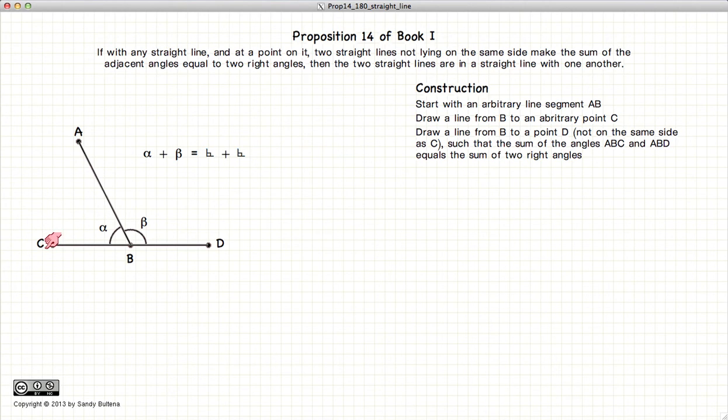According to the Proposition, lines C, B, D form a single straight line. So we're going to prove this by contradiction. In other words, we're going to assume that this is false and show that we come up with an inconsistency.